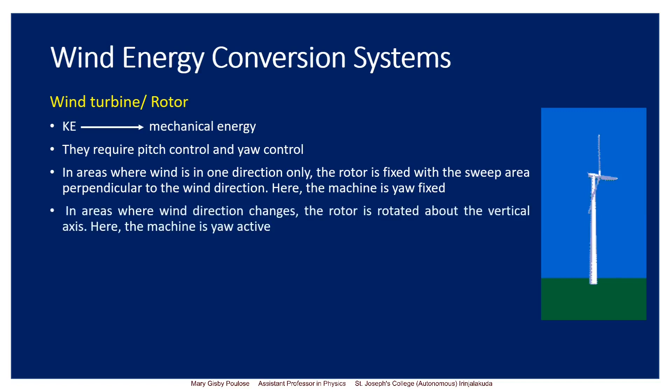In areas where wind direction changes, the rotor is rotated about the vertical axis — here the machine is yaw active. If the direction of the blades has to be continuously changed, then the yaw angle should be changed and hence that machine is yaw active.